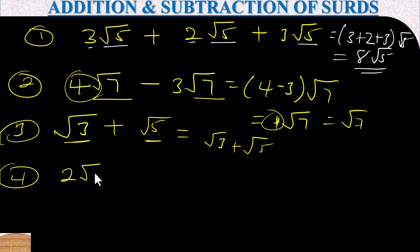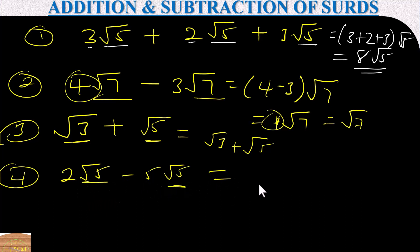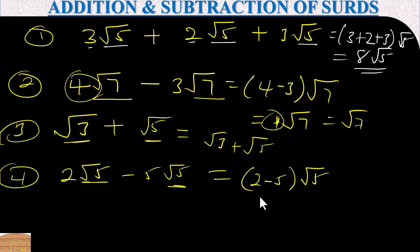Example four: 2√5 minus 5√5. These are of the same form, so we subtract the coefficients: two minus five equals negative three. Therefore the answer is negative 3√5.